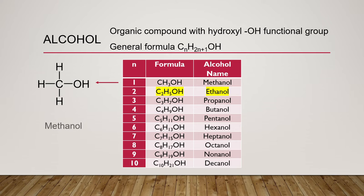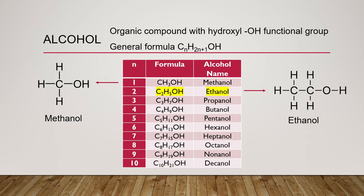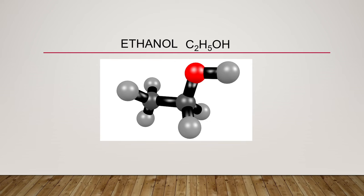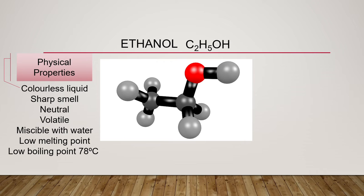The first member of alcohol with one carbon is called methanol. The subsequent alcohol in the list, having two carbons, is ethanol with the formula C₂H₅OH. Ethanol is a colorless liquid with a sharp smell and almost neutral pH. It is volatile, has a very low melting point, and has a boiling point at 78 degrees Celsius. Most importantly, ethanol is miscible with water and is able to dissolve many organic molecules that don't dissolve in water.